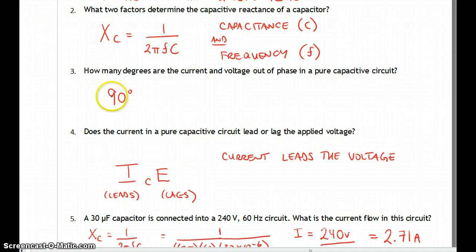Does the current in a purely capacitive circuit lead or lag the applied voltage? Well, the mnemonic that we have here is the ICEMAN, where current leads and the voltage lags.